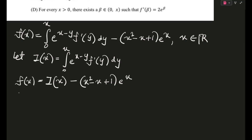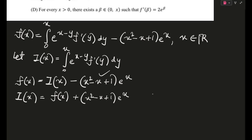If we adjust this a little bit and take that particular term to the left-hand side, then i(x) = f(x) + (x² − x + 1)·eˣ. Now this is important because we are going to differentiate this equation. Differentiating, i'(x) will come out to be: integral from 0 to x of e^(x−y) · f'(y) dy, plus f'(x) — using the chain rule and Leibniz rule.